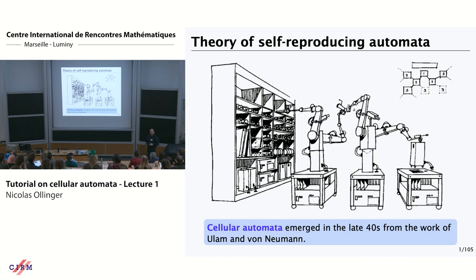Von Neumann was first thinking about building a real machine, and Ulam convinced him to have some kind of mathematical object that would do the same — and it would be more practical to design. The result was cellular automata.